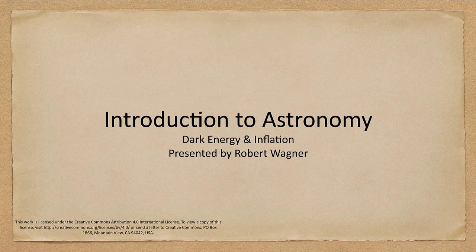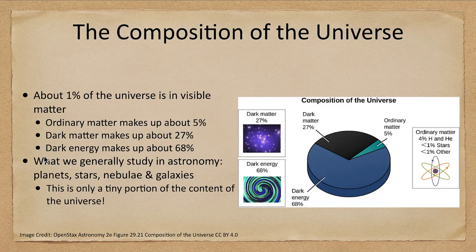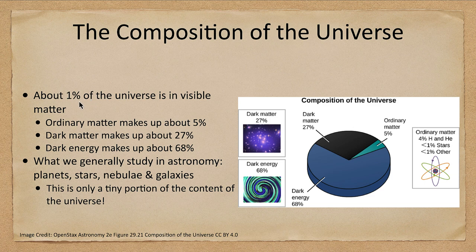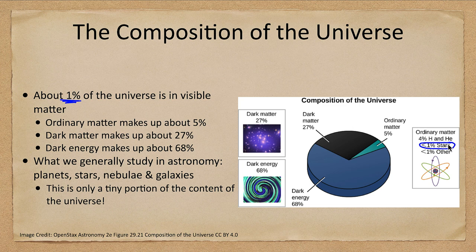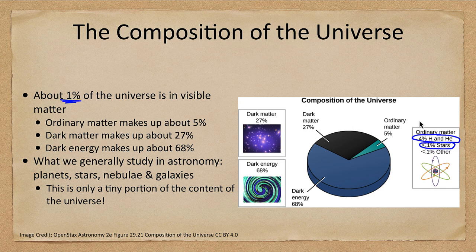So what is the universe made of? We've looked at this before. Only about 1% of the universe is visible matter that we've studied. Less than 1% of that is stars, which we see as stars and galaxies. That's the ordinary matter. About 4% hydrogen and helium. This ordinary matter constitutes about 5% of the material in the universe.